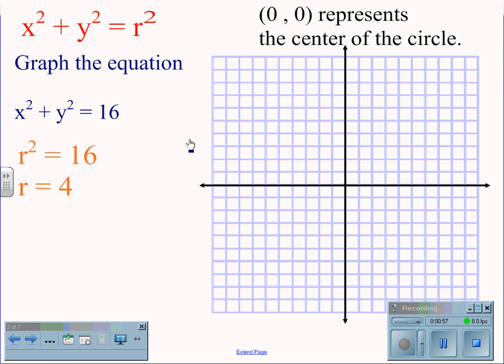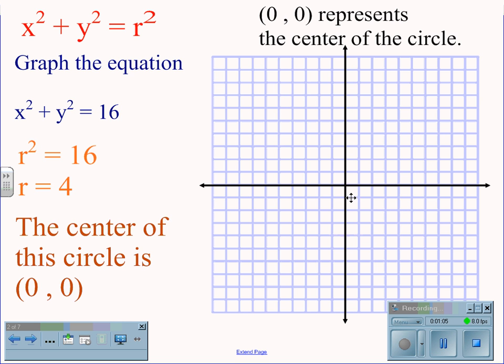To solve for the radius, we simply write out r squared equals 16. Therefore, r will equal 4, and we know the center of the circle is the point 0, 0.